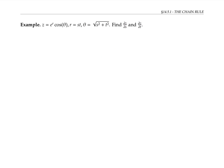As an example, let's find partial z partial s and partial z partial t in this situation. I'll start by drawing my tree diagram, which gives me the following formulas.